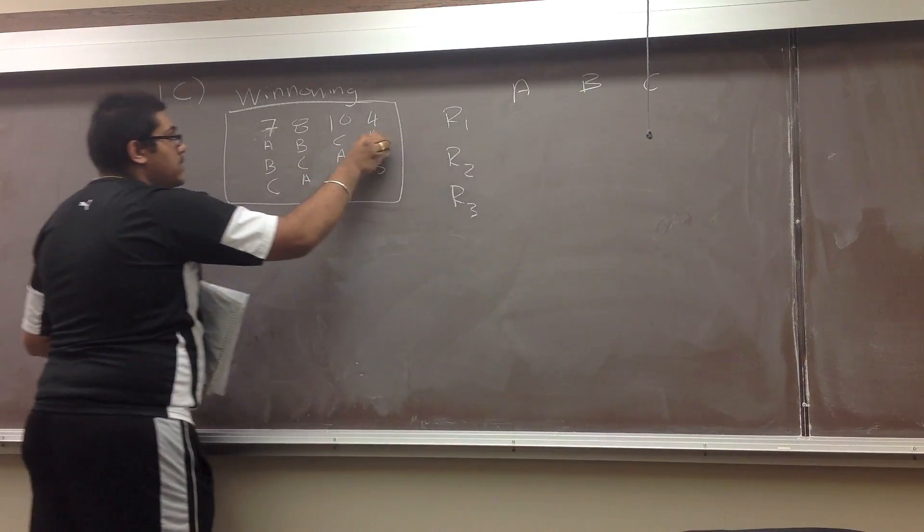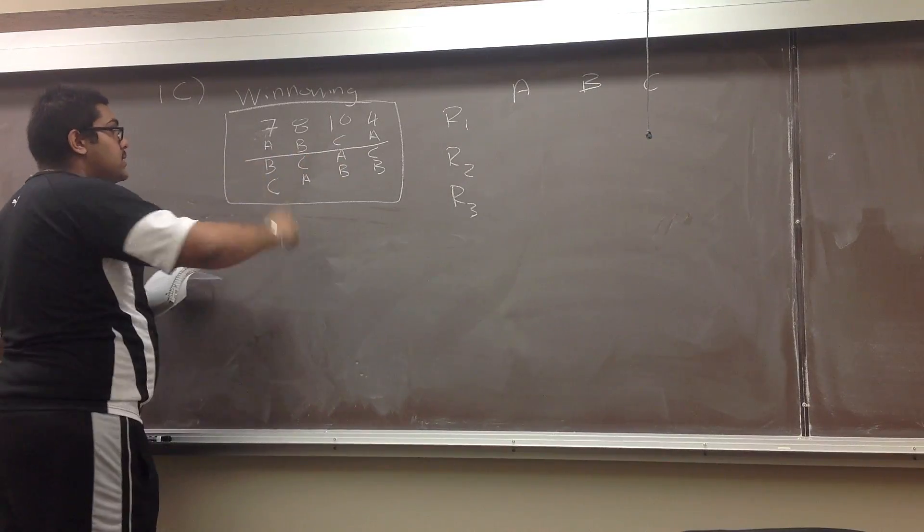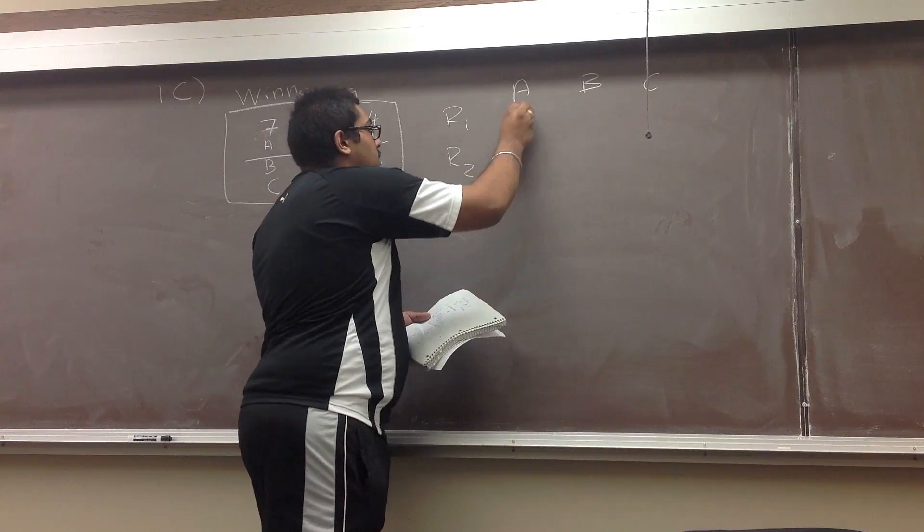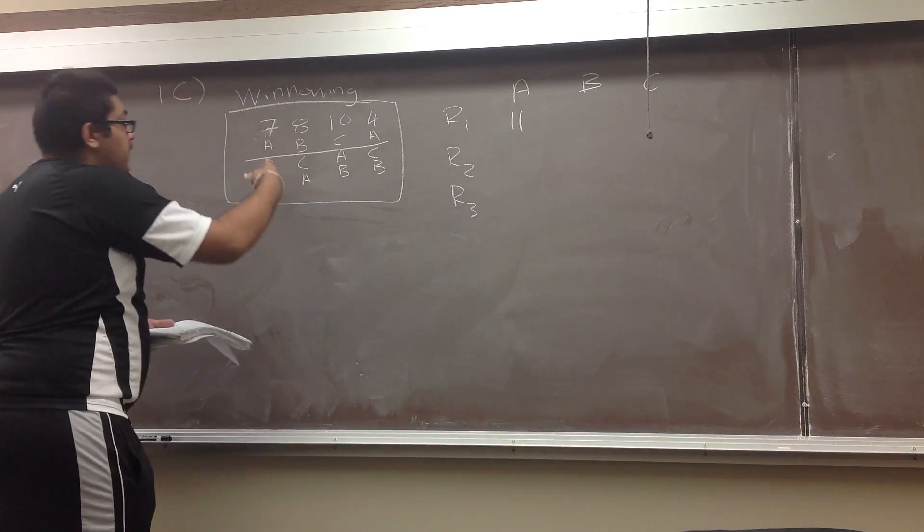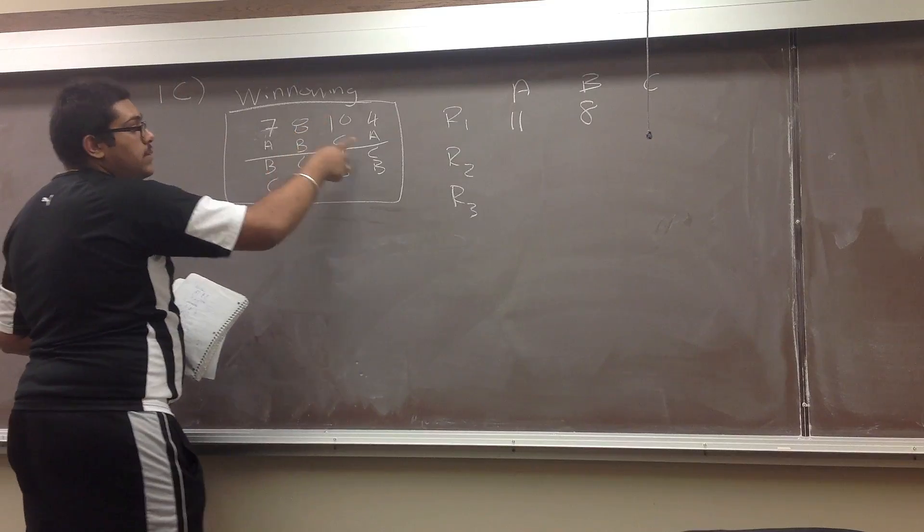So for round one, A has two different choices, seven and four. Seven and four added up equals eleven. B has a total of eight. And C has a total of ten from the first round.